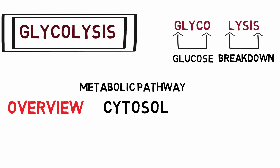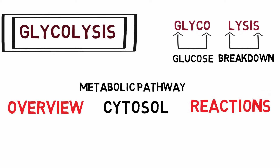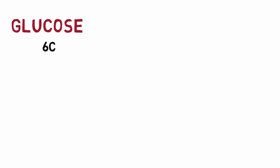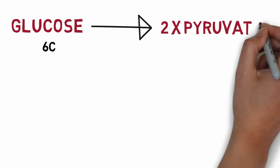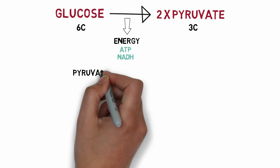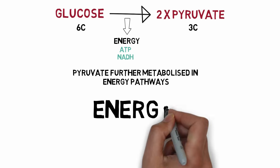First we will have an overview of this process, then we will study the various reactions involved. One molecule of glucose, a six-carbon compound, is broken down into two molecules of pyruvate, a three-carbon compound. In this conversion, energy is released in the form of ATP and NADH. The pyruvate formed is further utilized in various energy-producing pathways.